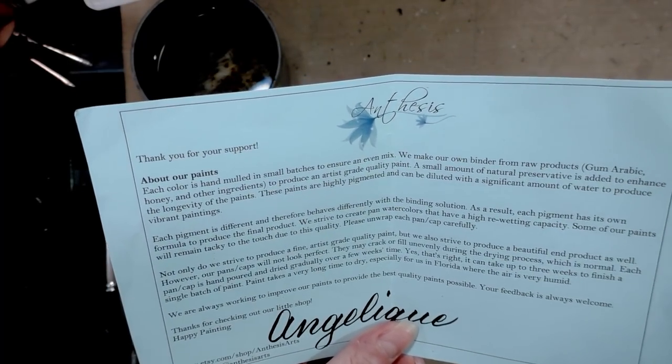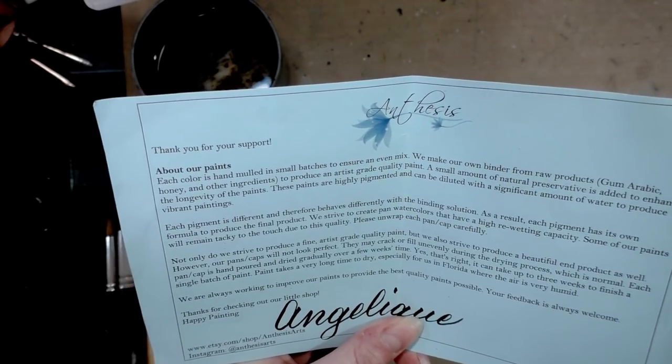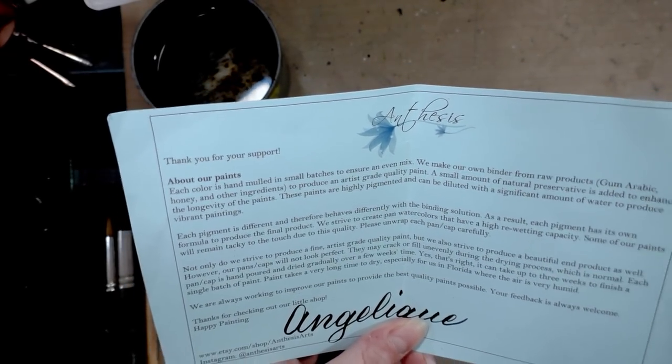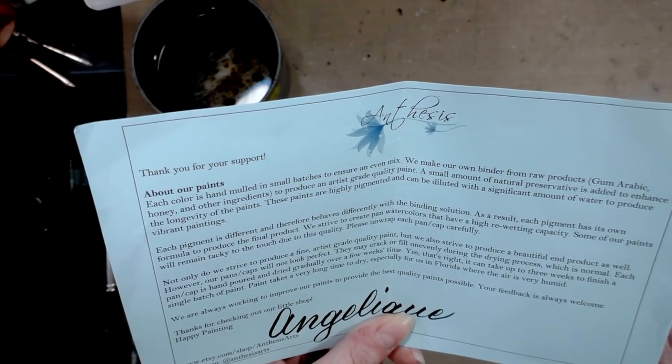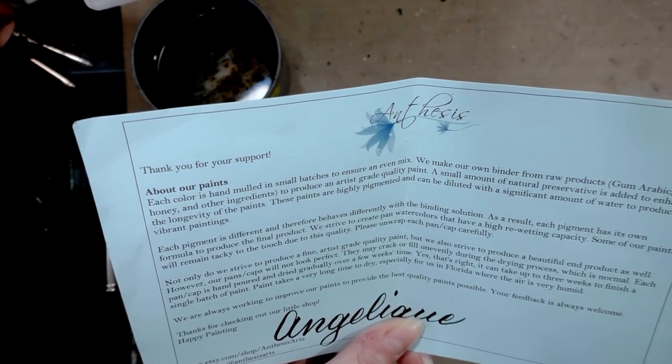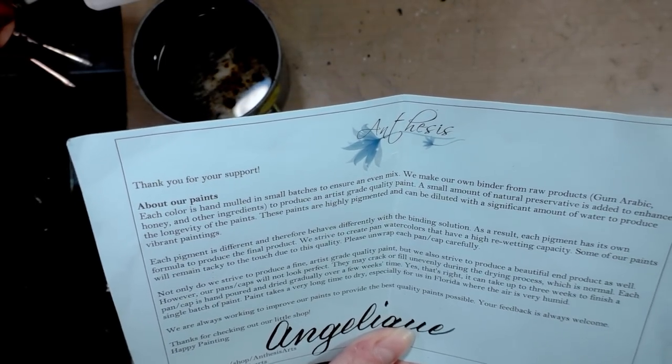Thank you for your support. About our paints: each color is hand molded in small batches to ensure an even mix. We make our own binder from raw products - gum arabic, honey, and other ingredients - to produce an artist-grade quality paint. A small amount of natural preservative is added to enhance the longevity of the paints.